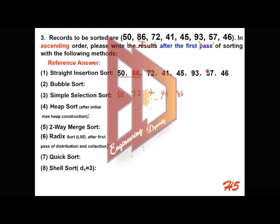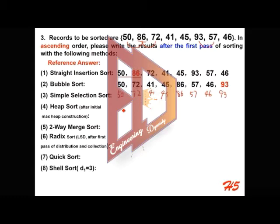The next adjacent pair, 57 and 93, are out of order and exchanged. Then 91 and 93 are compared with 46 and 61. After the first pass of bubble sort, the largest element sinks to the bottom. This is the result after the first pass of bubble sort.